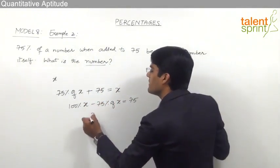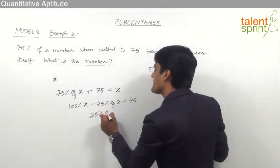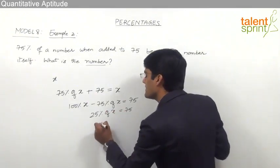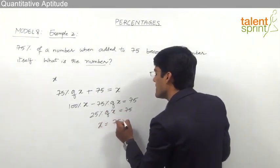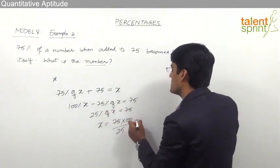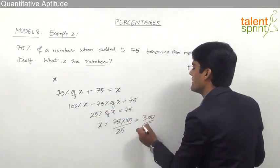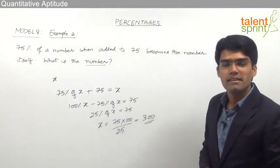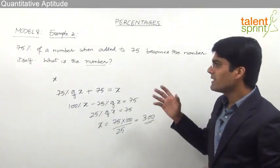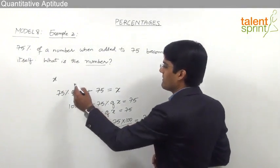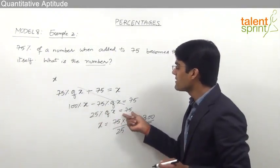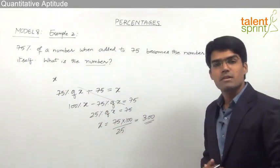So 25% of X is equal to 75. From this, X = 75 × 100 ÷ 25 = 300. The number is 300. If we understand the question properly we can directly say that 25% of X equals 75, without writing the first two steps.